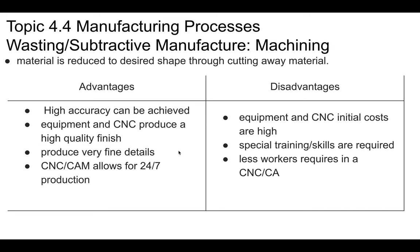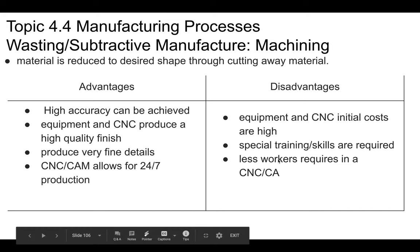Advantages of machining, especially with CNC or CAM (Computer Aided Machining), include high accuracy, beautiful quality finishes, fine detail, and the ability to run 24/7 production. Disadvantages include high expense, the need for special skills and training, and fewer workers required — which is an automation issue, as highly skilled and well-paid workers get displaced when computers take over the milling.